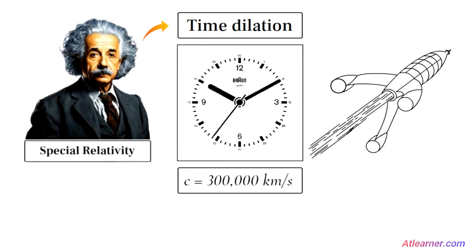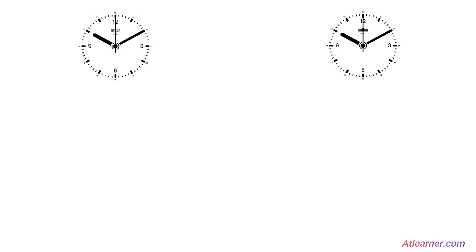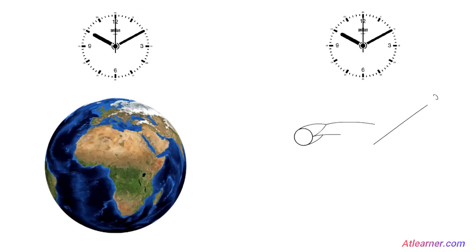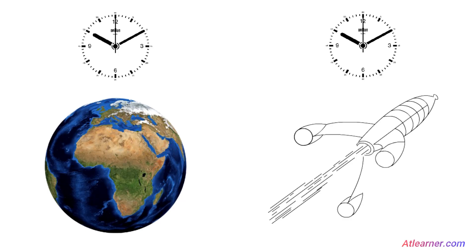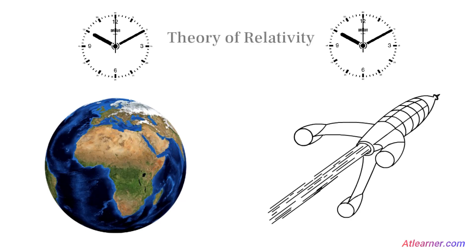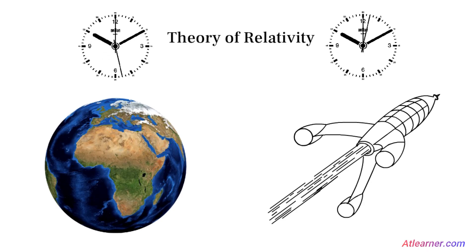To understand this concept, let's consider the following scenario. Imagine two clocks, one on Earth and one on a spaceship traveling at a high speed relative to the Earth. According to the theory of relativity, time will appear to pass more slowly on the spaceship than on Earth. This means that when the spaceship returns to Earth, the clock on the spaceship will have ticked fewer times than the clock on Earth.